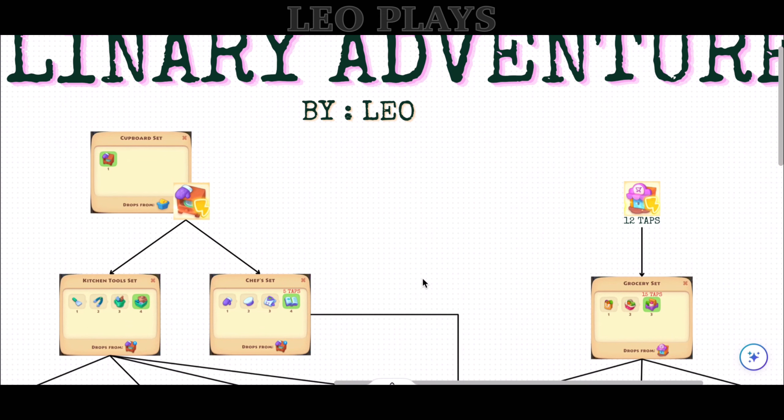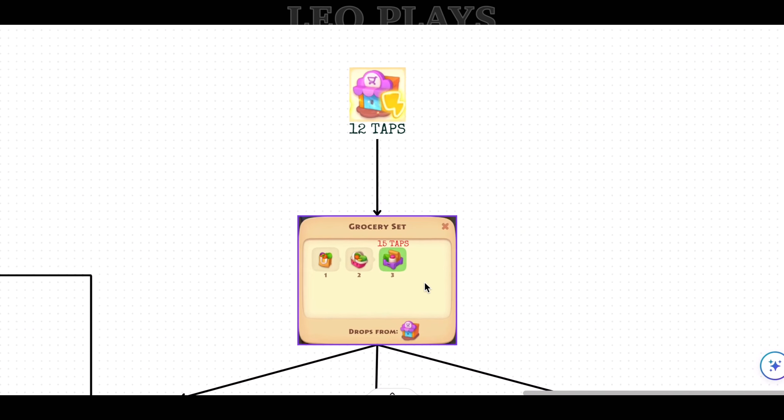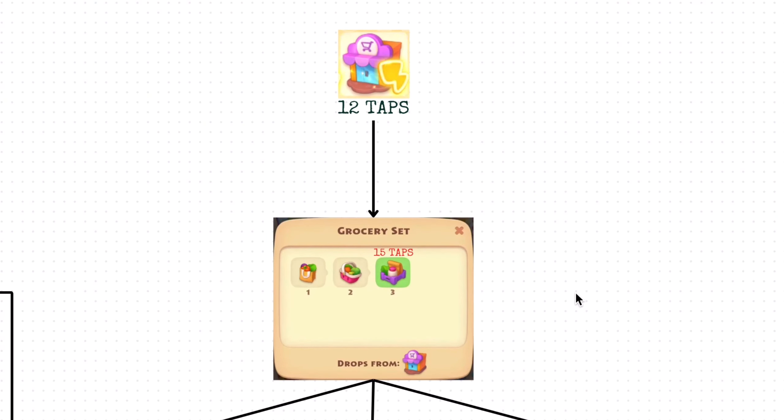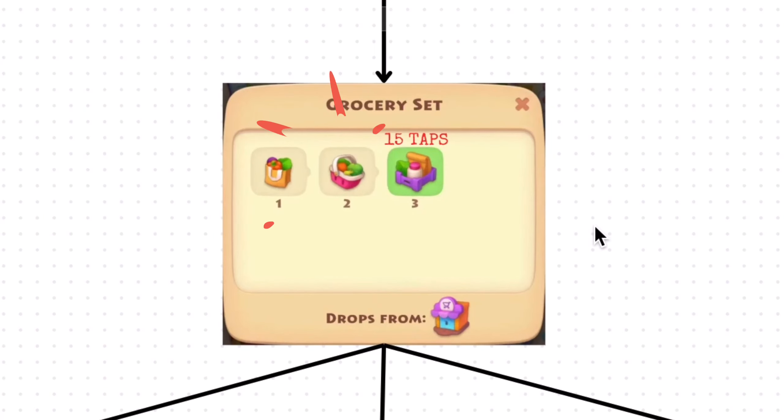From there, click on the items to merge. Let's start with the shop. The shop will produce the grocery set. You can tap the shop 12 times before it takes a rest. Merge the bag of groceries, then basket, to get the crate of groceries. You can tap the crate 15 times before it disappears.